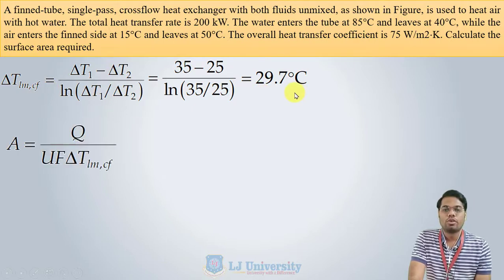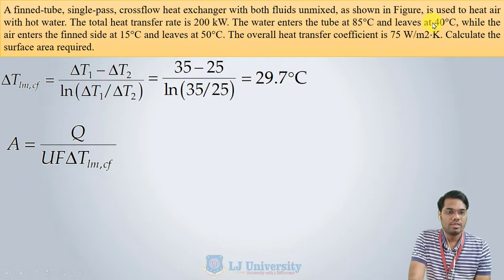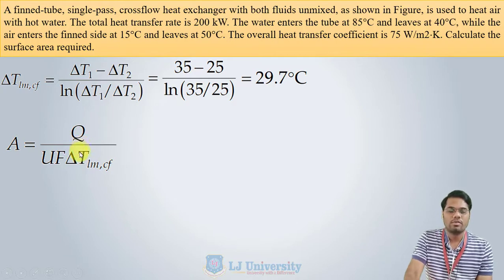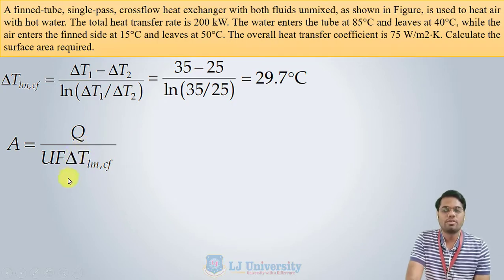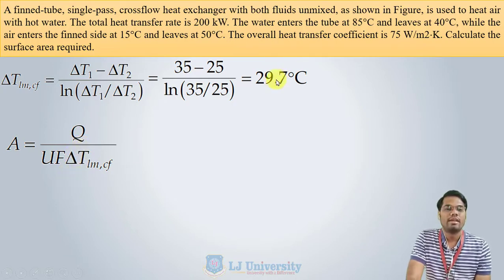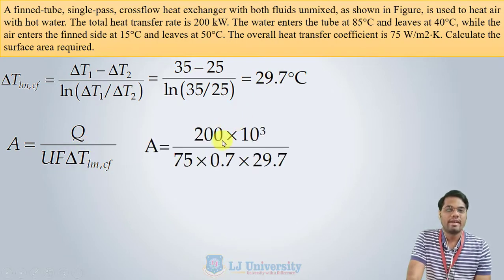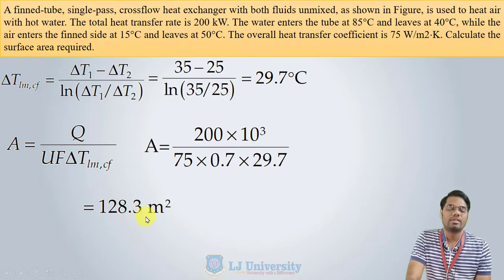Putting all values into Q = U·A·ΔT·F — with Q = 200 kW, U = 75 W/m²K, F = 0.9, and ΔT = 29.7°C — we get the required surface area as 128.3 m².